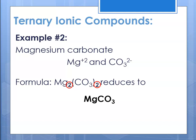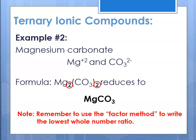We still know the charges are plus two and minus two, and plus two minus two is still zero — it's neutral. Putting those two twos in the formula would indicate something other than the lowest whole number ratio. We always have to use the factor method to write the lowest whole number ratio to represent the formula unit.